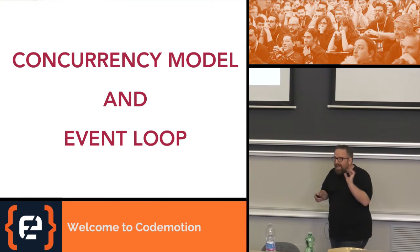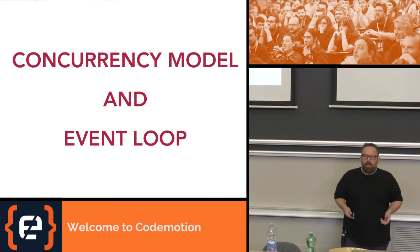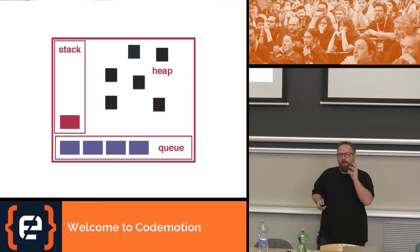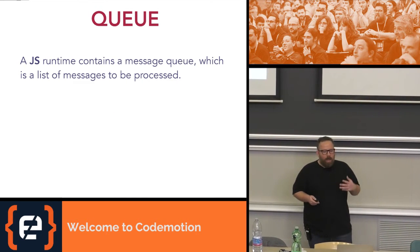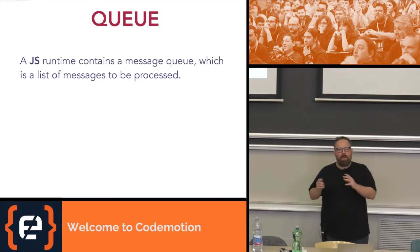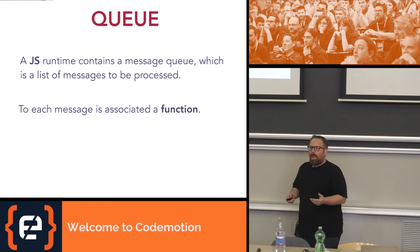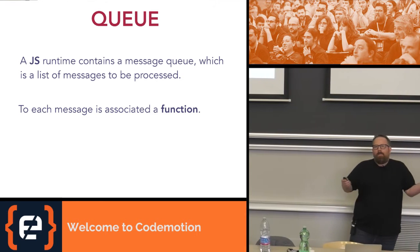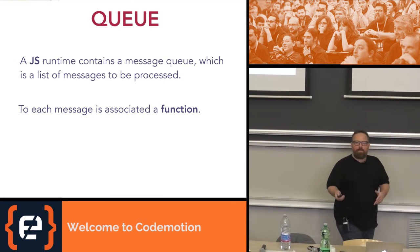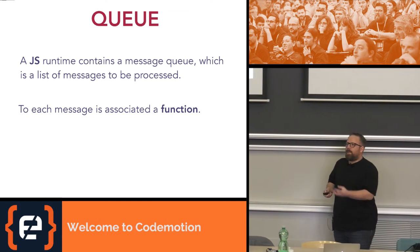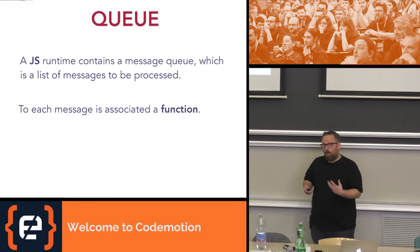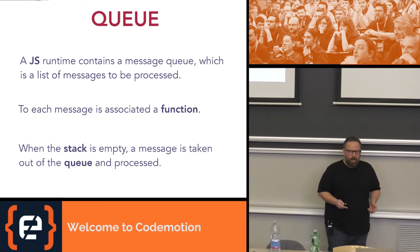So let's talk about the concurrency model and the event loop in JavaScript. Like many languages, JavaScript has the stack, a heap, but it also has something peculiar: the queue. In JavaScript, the runtime contains a queue, which is a list of messages to be processed. These messages are function calls, and they are isolated. That's something that should stick in your mind, because many of you probably had issues with the 'this' keyword in JavaScript. This is because everything is in isolation, in this queue.